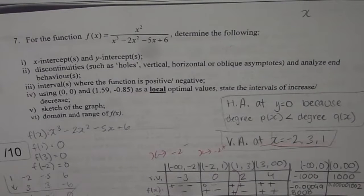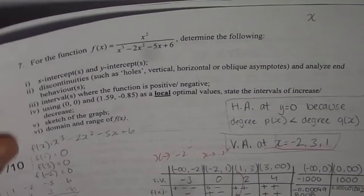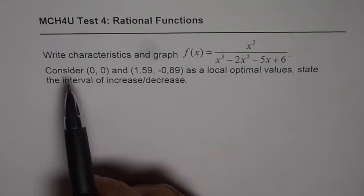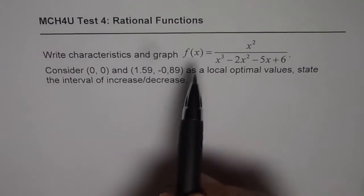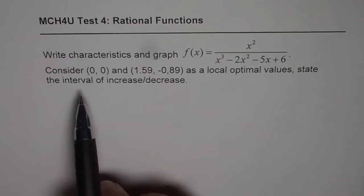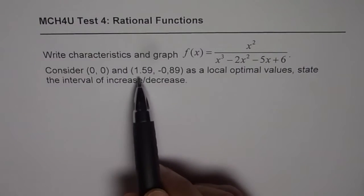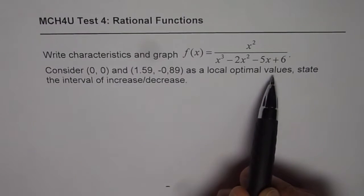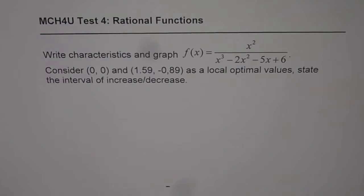I'm Anil Kumar sharing with you a test problem from Advanced Functions Unit 5. The problem says: write characteristics and graph f(x) equals 2x² divided by x³ minus 2x² minus 5x plus 6. Consider (0,0) and (1.59, -0.89) as local optimal values, and state the intervals of increase and decrease. This is a very interesting question — it may take about 10 minutes on a test.